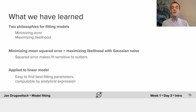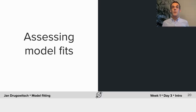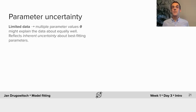Welcome back to part three of the introduction, where we'll learn about how to assess the quality of our model fits. Let's assume we found some best fitting parameters and we want to know how certain we can be about the specific found parameter values. The reason why we might be uncertain about these parameter values is that we usually deal with limited data, and as a consequence multiple parameter values might explain the data about equally well — a reflection of the inherent uncertainty about the best fitting parameters.